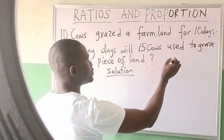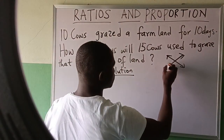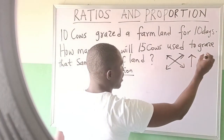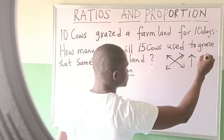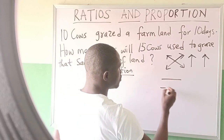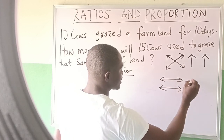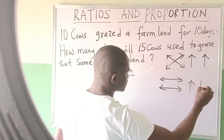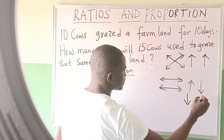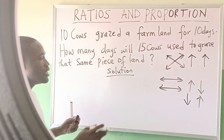If it is direct proportion, use this symbol to solve it — that means as one is increasing the other one must also increase. If it is inverse proportion, use this to solve it — that means as one increases the other one must decrease, or vice versa. That is just it.